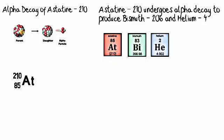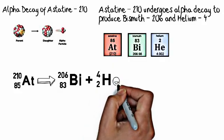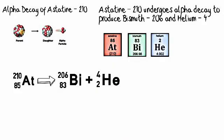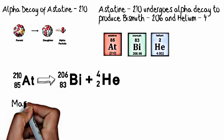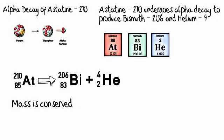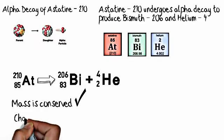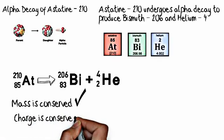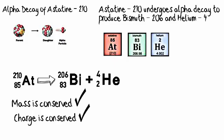Mass will have to be conserved. Charge will have to be conserved when we write out the reaction. We got 210-85 astatine gives us 206-83 bismuth, and 4-2 helium. Mass numbers are on the top. Charge numbers, which are the number of protons, are on the bottom. If you add up the tops, they're going to be the same on both sides of the arrow. So, mass is conserved. Add up the charges, they're the same on both sides of the arrow. Charges are conserved.